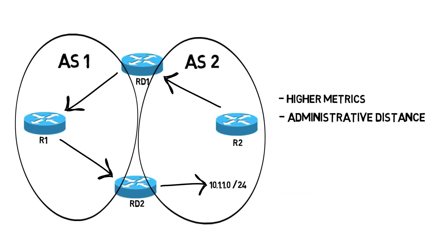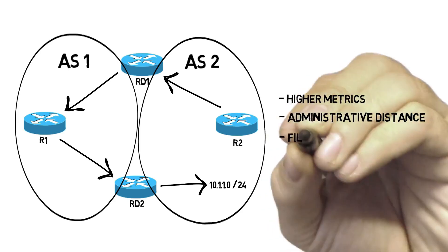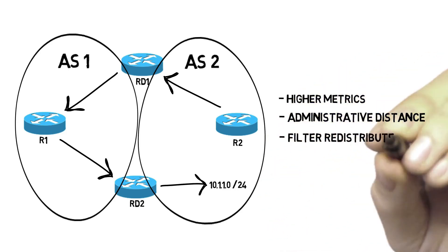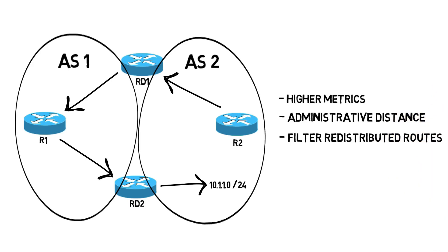Another way to overcome this potential routing loop is to filter routes as they're redistributed. For example, if we know all of the 172.16.0.0/16 networks reside in routing domain 1, we might go into the routers redistributing into that routing domain and filter that route out. After all, that route lives in that domain — there's no sense advertising it into the domain from another domain. You could use a route map to do that filtering.